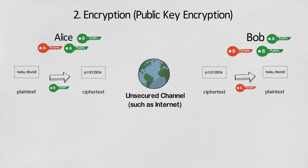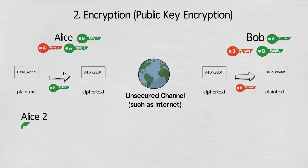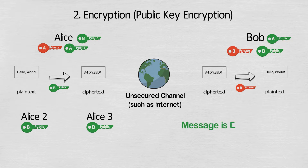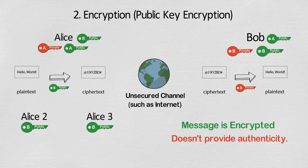Similarly, Bob can reply using Alice's public key to encrypt the message, which can be retrieved only by Alice's private key. Thus, both sides can have encrypted communication, but the authenticity of the source of the message is missing. There is no way to be sure who sent the message, as everyone has access to each other's public key.